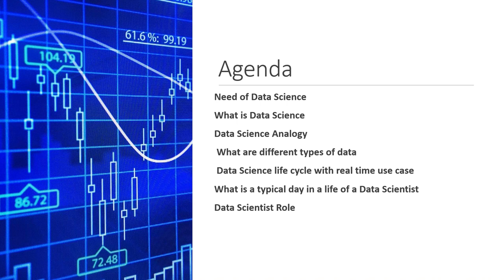Data science is all about one layman definition: how do you make decisions? It is all about just by looking at numbers, or by looking at graphs, we can be able to make decisions. So in order to understand why we need to make a decision, we will go through step by step.